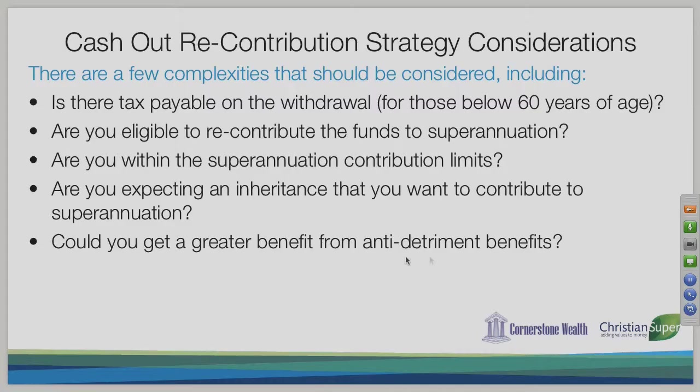There is one other consideration: anti-detriment benefits. This is a holdover from the Costello era, where certain super funds actually pay anti-detriment benefits that reimburse some of the 15% contributions tax on money you put into your super fund if you die without utilizing it. You can claim these on the event of death to recover some of the contributions tax. However, if you do the cash out recontribution strategy, you miss out on these anti-detriment benefits because they only apply to taxed components. Often we err on the side of caution and proceed with the cash out recontribution strategy since the benefit is more predictable, but this is a factor worth weighing.